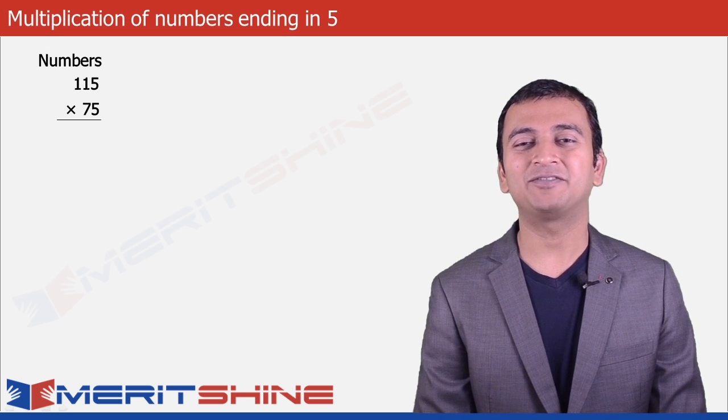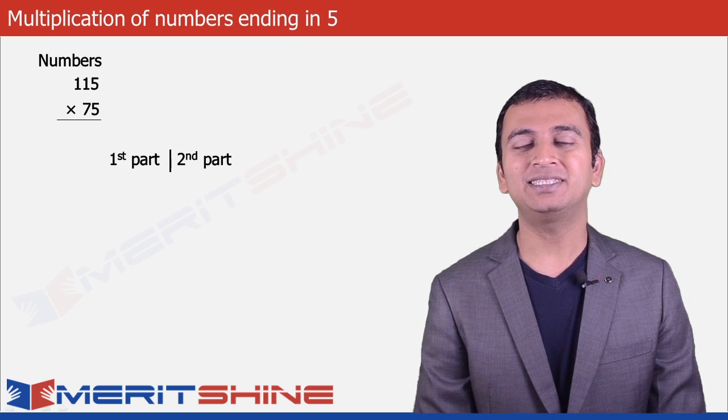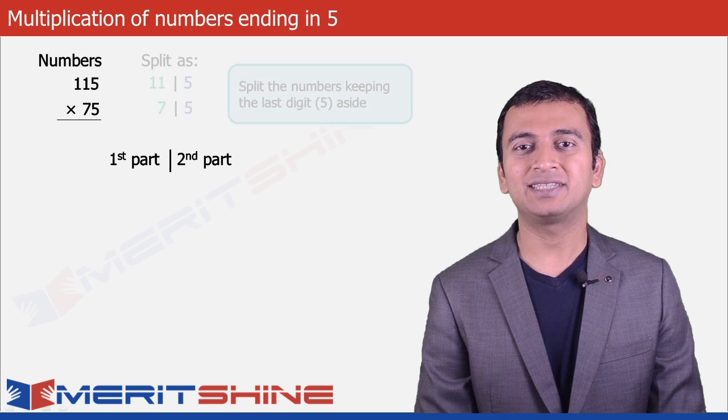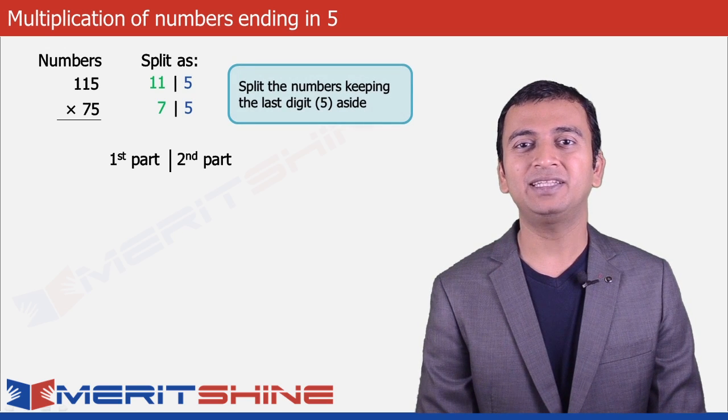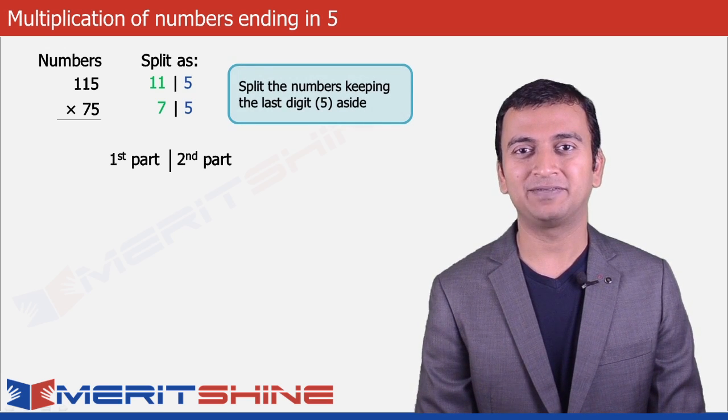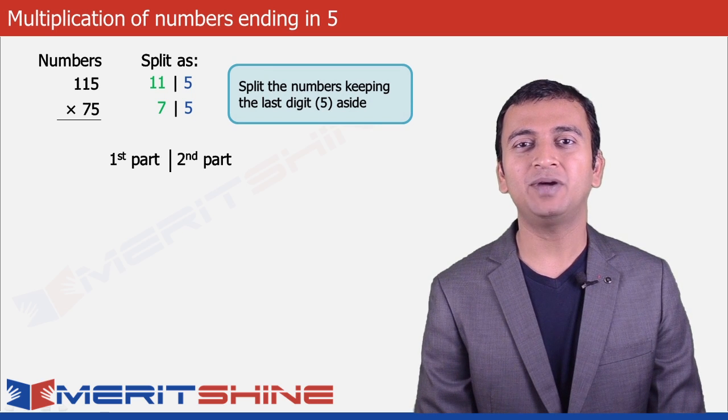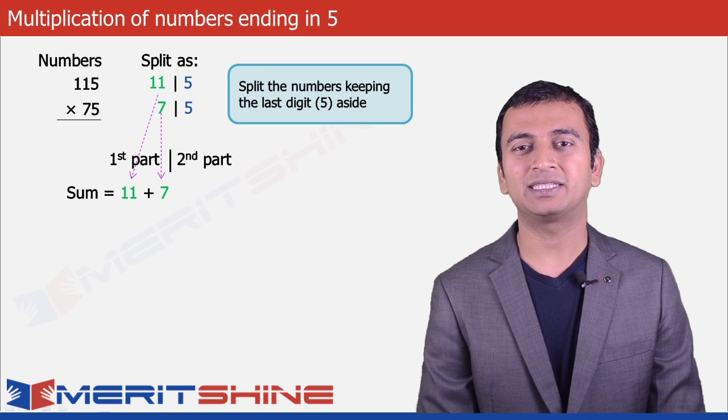To write down the answer, we will have to make two parts. For the numbers, if we leave aside the unit digit, we will be left with 11 and 7 respectively. First step would be to add these two, which is 11 plus 7, 18.